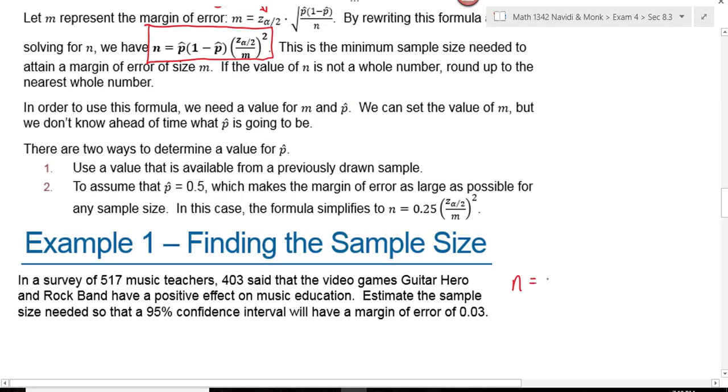Add this to your notes so you don't have to do the algebra every time. Our sample size equals P-hat Q-hat, remember Q is 1 minus P, times our critical value divided by the margin of error squared. If you know a value for P-hat and Q-hat, you do this.